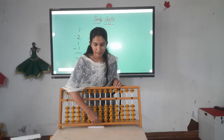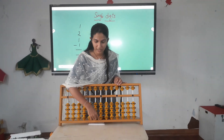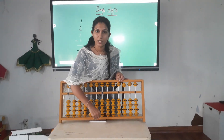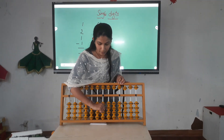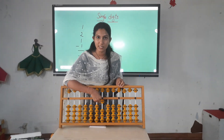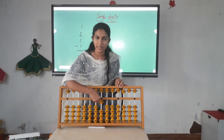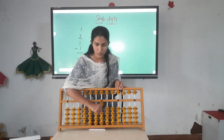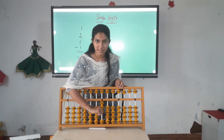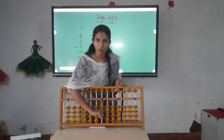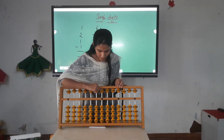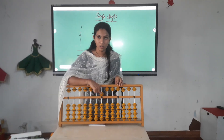Now let us see the value of the beads. For the lower beads, you can see there are 4 beads and the value of each bead is 1. Only when the beads are pushed upwards and touch the center beam, there is a value. So pushing one bead is 1, two beads is 2, three is 3, and four is 4. The upper bead has a value of 5.